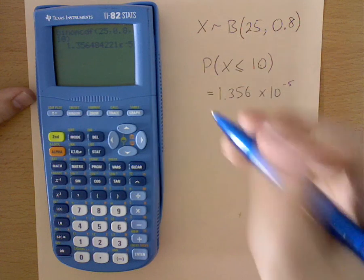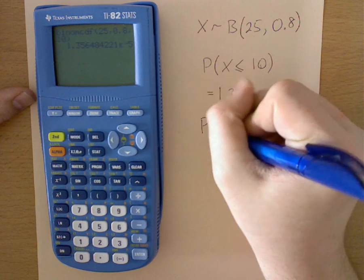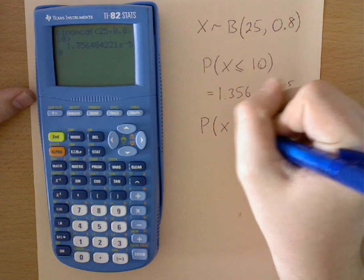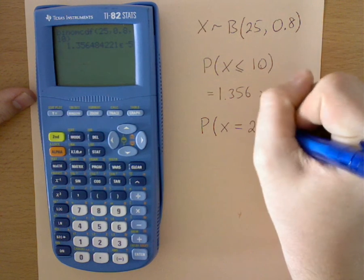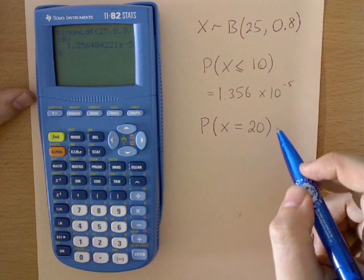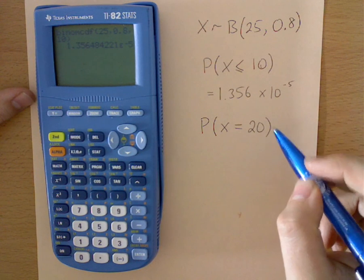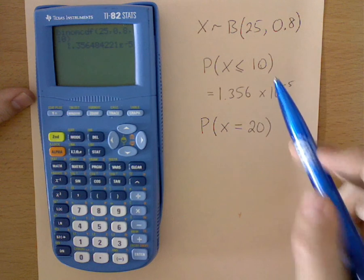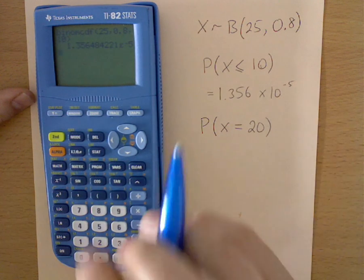So let's say I then wanted to find what is the probability of X being equal to 20, for example. Now in that, you'd need to find the binomial PDF function, P for particular, C for cumulative. So P for particular.